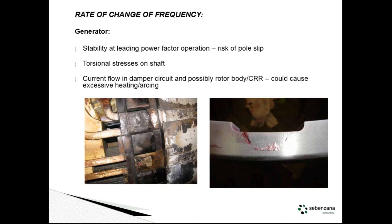A big turbine generator shaft — what are they, 40 to 50 meters on these big machines, totally end-to-end — is nice and stiff in one plane, but in terms of twisting resistance, not that good. So you're putting torsional stresses on by rapidly changing frequency, with potential to cause long-term fatigue damage. The other issue, of course, is on the generator: you've got a damper circuit designed to handle negative sequence currents and maintain surface currents in the rotor, and it's also there to keep the machine synchronized.